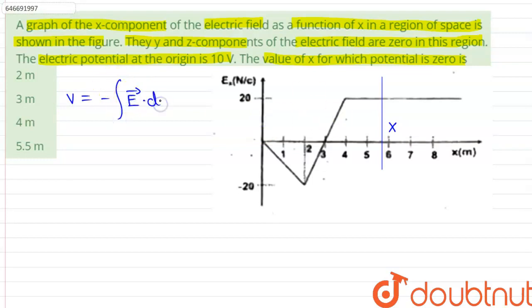Therefore, the area until the point 3 can be denoted by area one, and the area until x equals to capital X can be denoted by area two. For potential to be zero, the area one plus 10 volts, as the initial potential at the origin is 10 volts, should be equals to the area two.